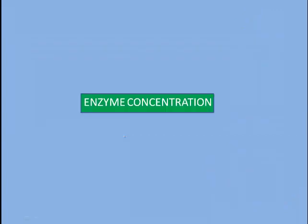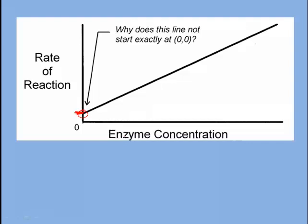Another factor that affects enzyme function is enzyme concentration. Providing there's enough substrate, the more enzyme you add, the more substrate produced, and this limits the overall rate of the reaction. If you look at this graph, there's an interesting question here. Why does it not begin exactly at zero, zero?